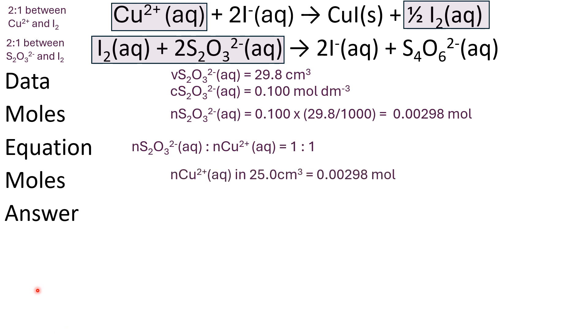That means the number of moles of copper 2+ in 25 cm³ in our titration is also 0.00298 mol.